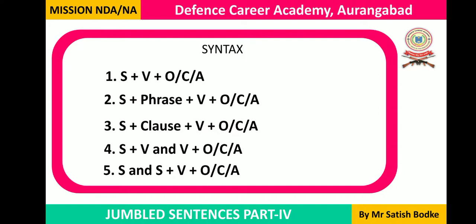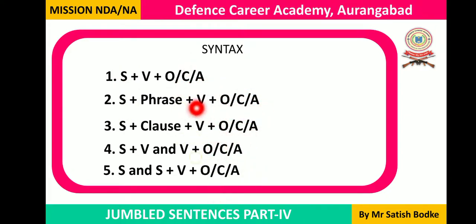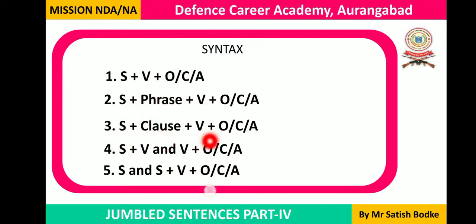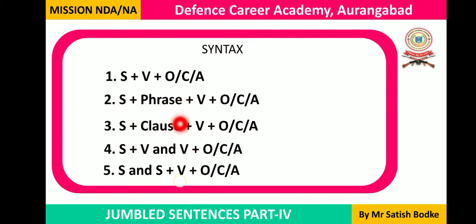These are the syntax types which we already learned in earlier sessions, given here for revision. In any kind of sentence, the first part is the subject — except in interrogative sentences and some other structures — and the last part is object, complement, or adverbial. After the subject, a verb is used. Sometimes between the subject and the verb, a phrase can be inserted, or a clause can be inserted — introduced with a relative pronoun such as 'who'.